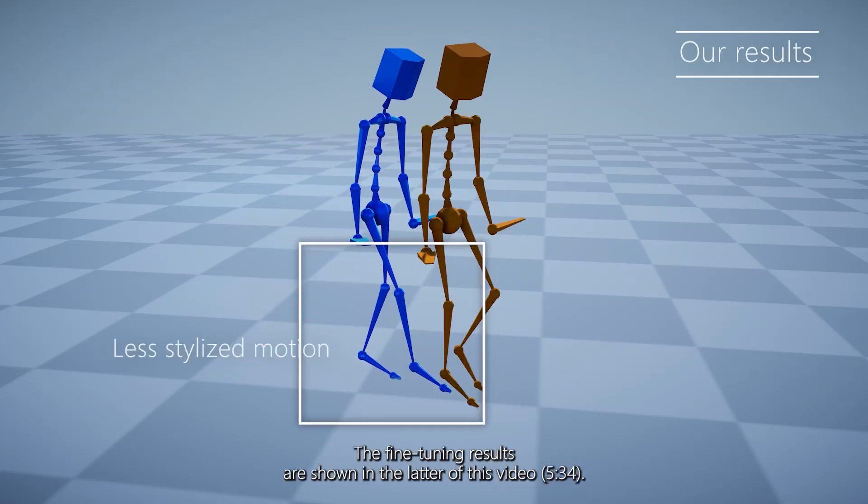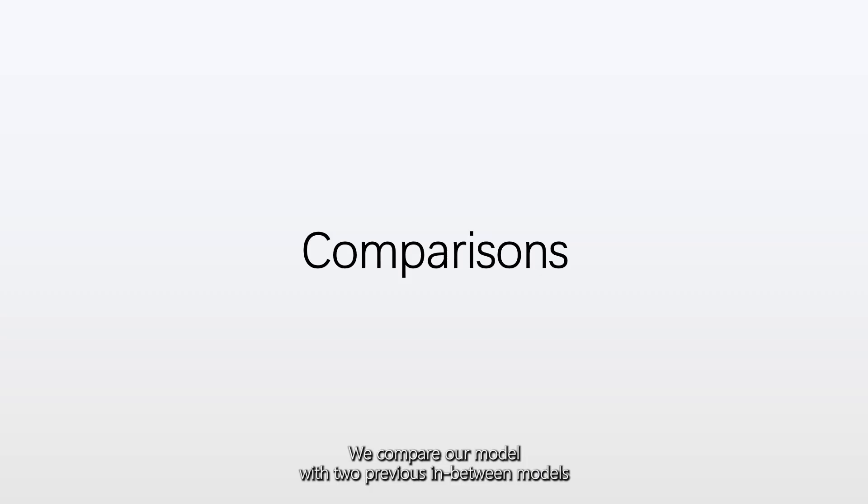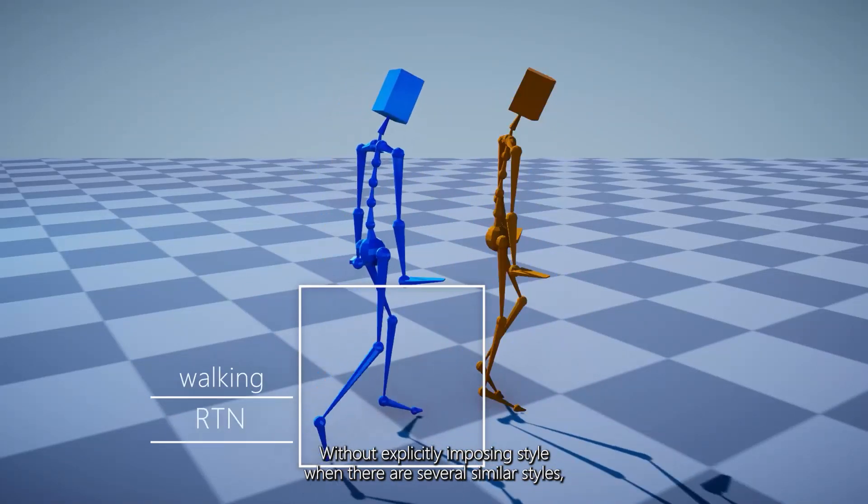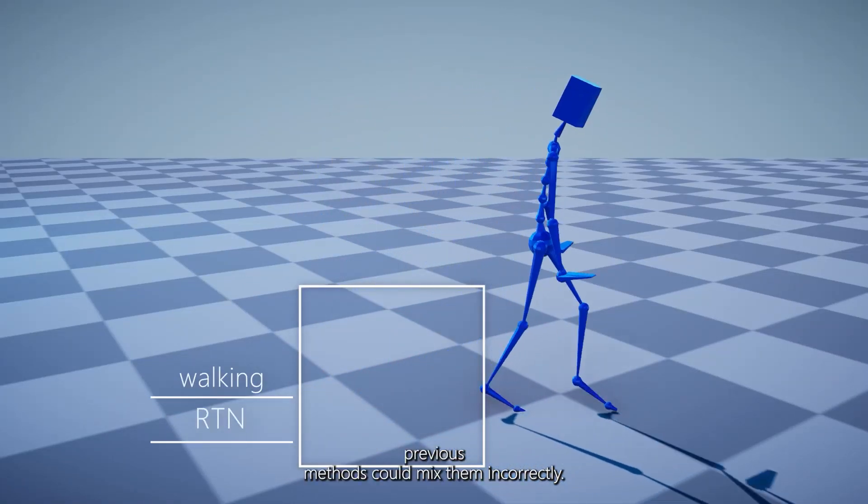The fine-tuning result is shown in the latter of this video. We compare our model with two previous in-between models. Without explicitly imposing style, when there are several similar styles, previous methods could mix them incorrectly.